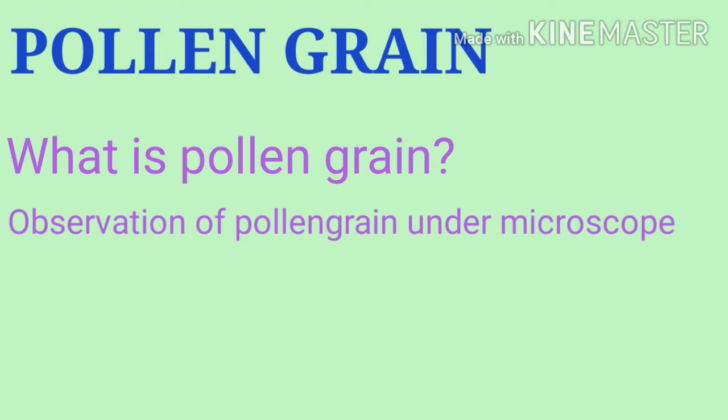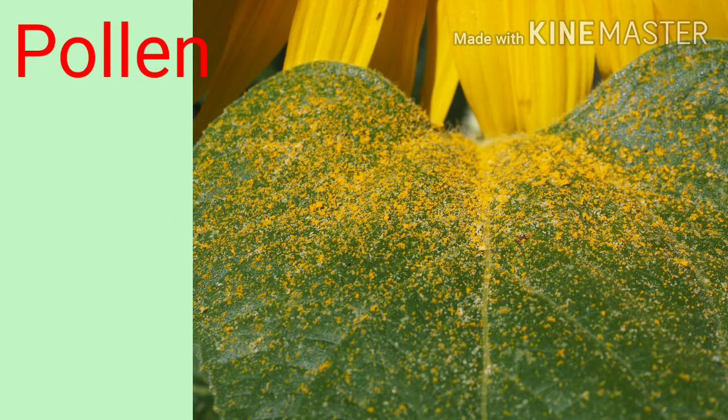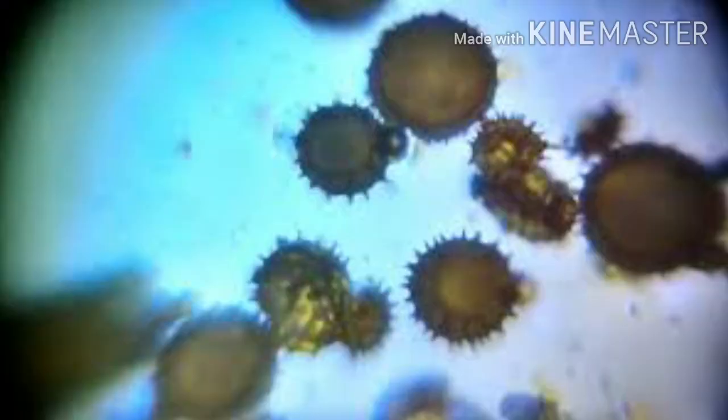Observation of pollen grain under the microscope. Pollen is a powdery substance consisting of pollen grains which are male micro gametophytes of seed plants which produce male gametes.